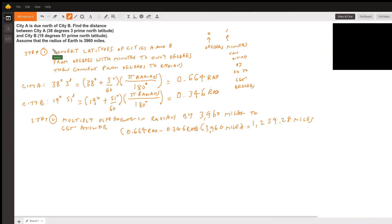Welcome, this is Sammy. The question is: City A is due north of City B. Find the distance between City A at 38 degrees 3 prime north latitude and City B at 19 degrees 51 prime north latitude. Assume that the radius of Earth is 3960 miles.